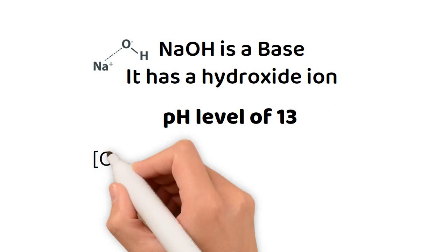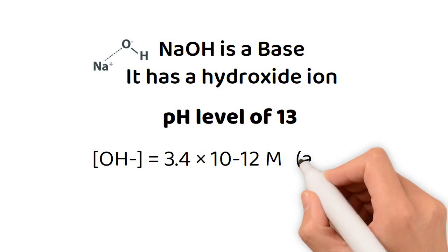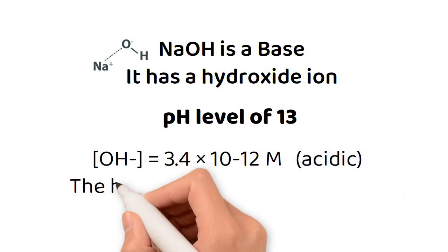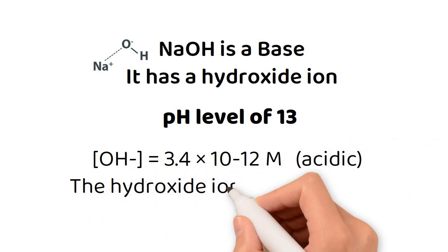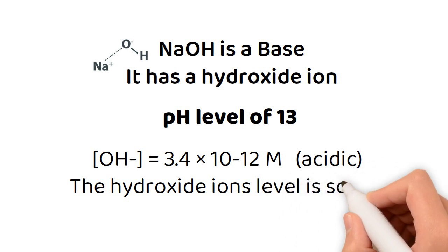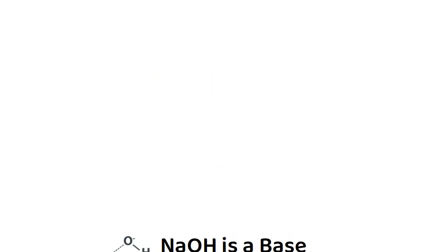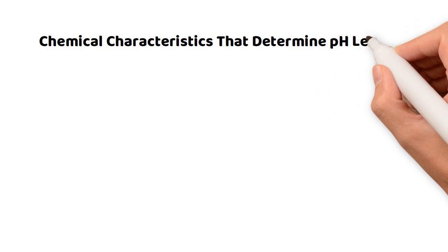If a solution has OH- equals 3.4 times 10 to the -12M, it is acidic because the hydroxide ion level is so low.